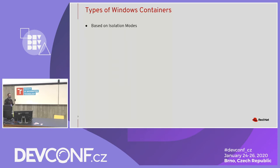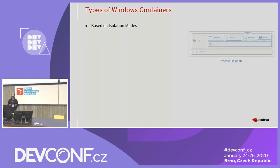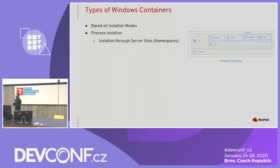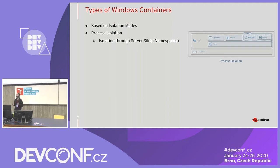There are a couple of ways you could run a Windows container, and that differentiation is based on isolation modes. The first mode people typically think about is process isolation. Process isolation means that you have namespaces, and you use those namespaces to protect containers from each other for multi-tenancy purposes. However, Windows has no construct called namespaces.